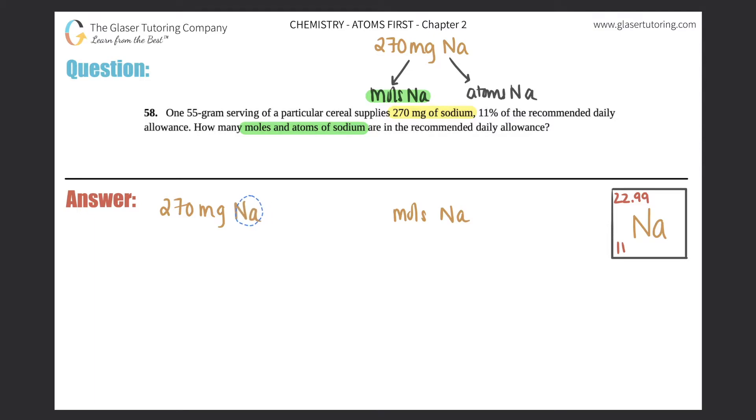In this case, they gave us milligrams. So the first thing that we're going to have to do is we're going to have to find the grams of sodium, and then from there, we can get the moles of sodium. So this first part is a two-step process.